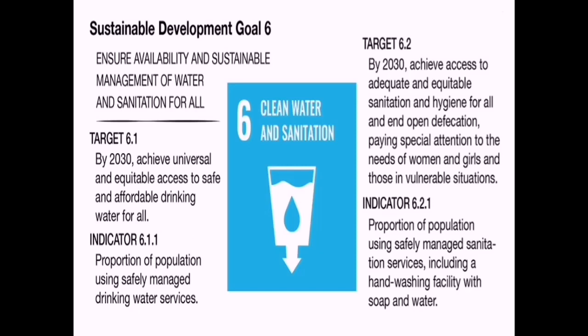United Nations Sustainable Development Goal 6 goes beyond providing safe drinking water, sanitation and hygiene to also address the quality and sustainability of water resources. The goal is to achieve universal and equitable access to safe and affordable drinking water for all, improve water quality by reducing pollution, eliminating dumping and minimizing release of hazardous chemicals and materials, and substantially increasing recycling and safe reuse to overcome water scarcity by the year 2030.